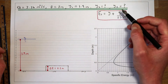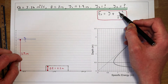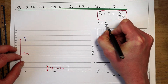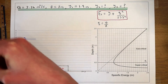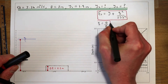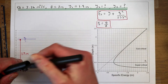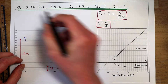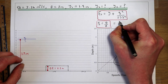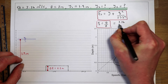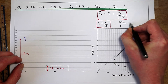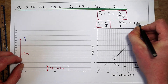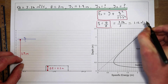What we need to know to plot this is what the flow per unit width is. The flow per unit width is our flow rate over the width of our river. We're told in the question that our flow rate is 3.36 metres cubed per second and the width of our river is 3 metres, so our flow per unit width is 1.12 metres squared per second.